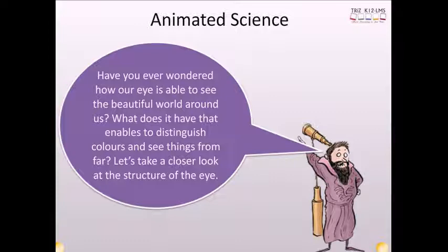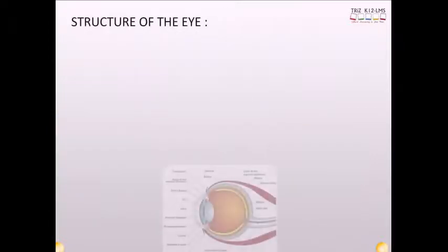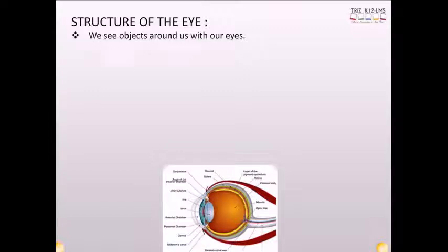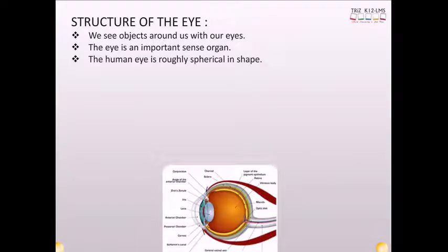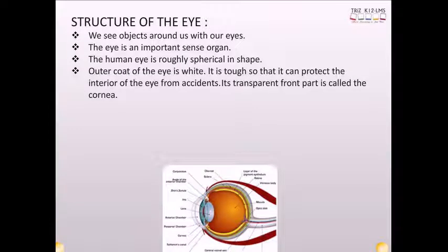Have you ever wondered how our eye is able to see the beautiful world around us? What does it have that enables it to distinguish colors and see things from far? Let's take a closer look at the structure of the eye. We see objects around us with our eyes. The eye is an important sense organ. The human eye is roughly spherical in shape. The outer coat of the eye is white. It is tough so that it can protect the interior of the eye from accidents. Its transparent front part is called the cornea.